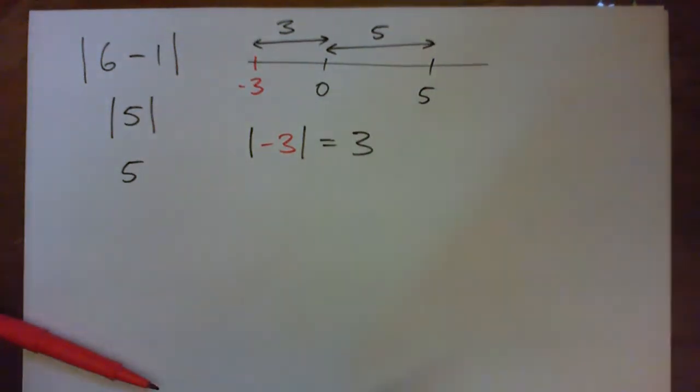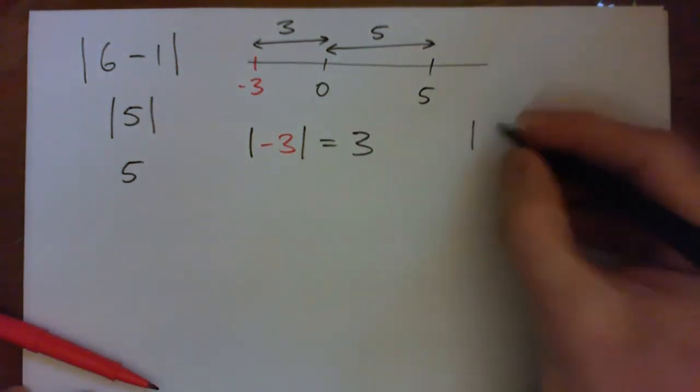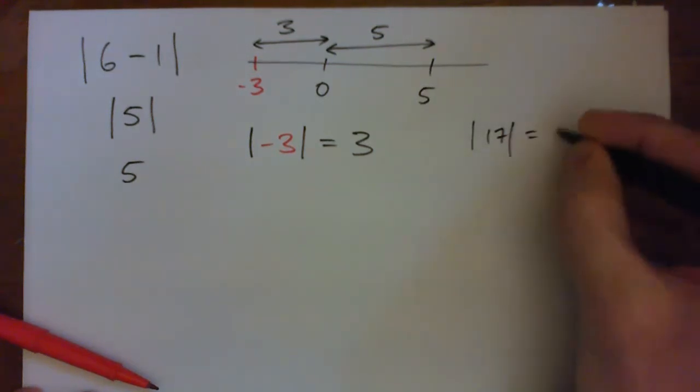So again, absolute value is distance from 0. So the absolute value of 17 is just 17.